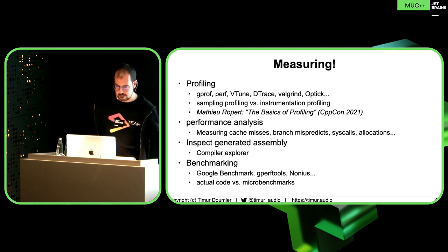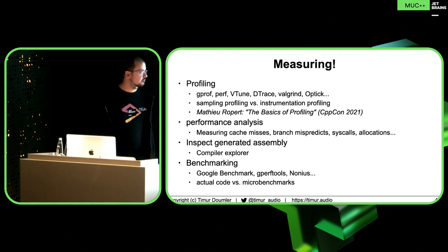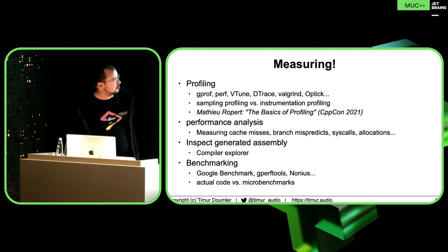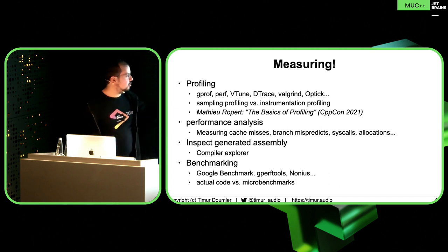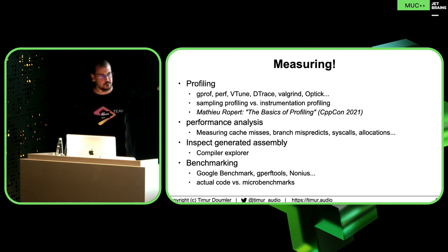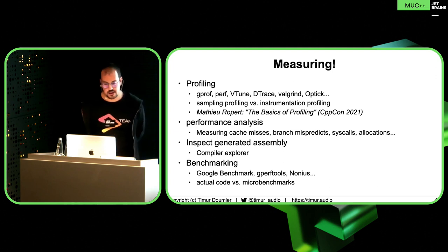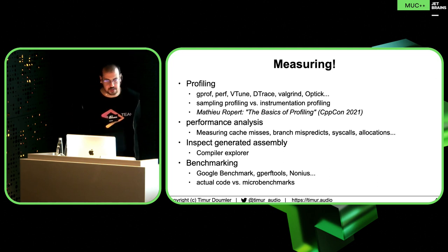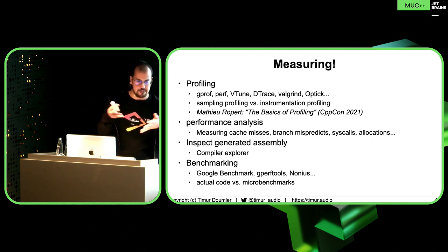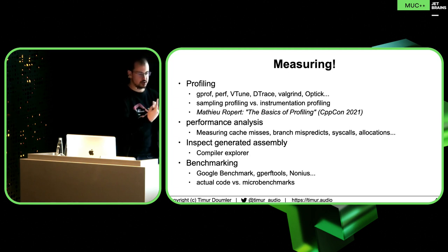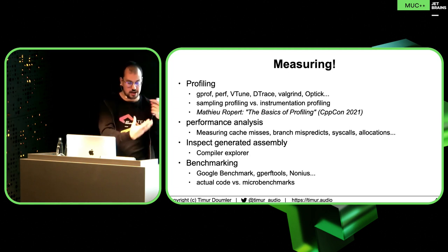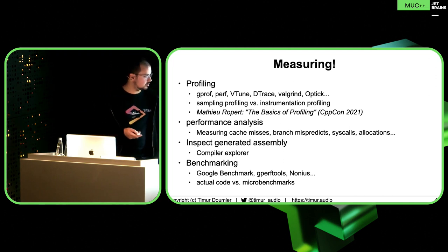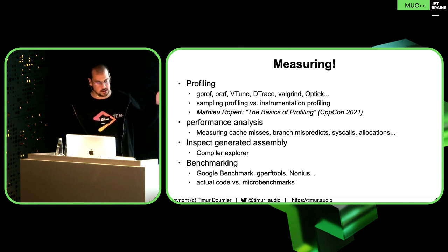In order to measure, we have lots of tools. We have profiling — countless tools for that. We actually have two integrated in CLion: Perf on Linux and DTrace on Mac. So if you open CLion there is a profile button — you can profile your code directly from the IDE, which is pretty cool. There's also VTune, which is very popular. There is a distinction between sampling profiling versus instrumentation profiling: you either just take a sample of what the code is already doing, or you insert more stuff so you get a more detailed view, but you also change what's going on. There was a talk by Mathieu Ropert last year at CppCon — the basics of profiling — which explains all of that.